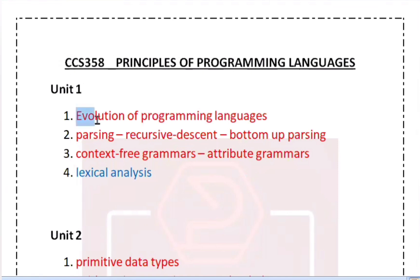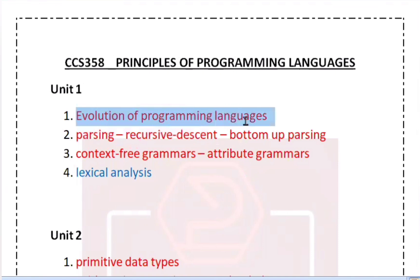If you look at Unit 1, the evolution of programming languages, you will get a little bit of this question. The evolution scope — this kind of question we can expect.